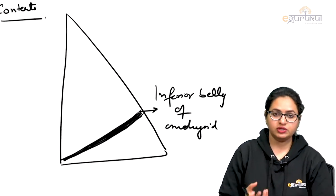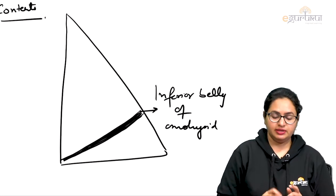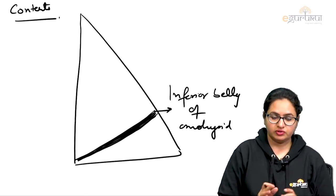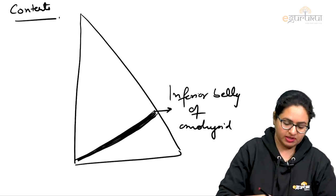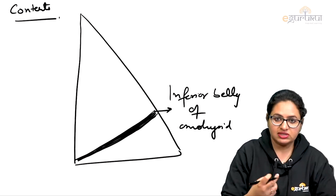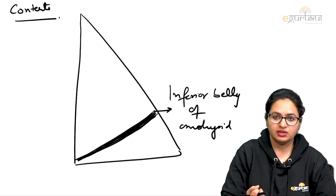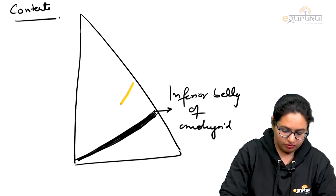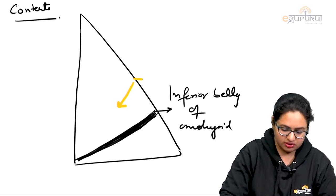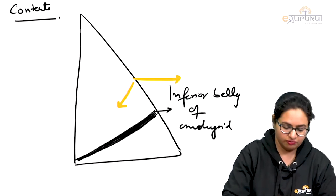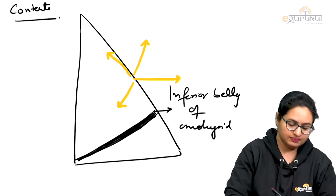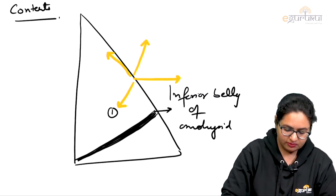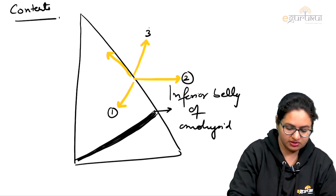As we talk about the contents of this triangle, the cutaneous nerves which are present in the roof are piercing the roof and reaching towards the superficial fascia. As they emerge from the cervical plexus, the initial parts of those nerves form the contents of this triangle. These are: 1st, 2nd, 3rd, and 4th.